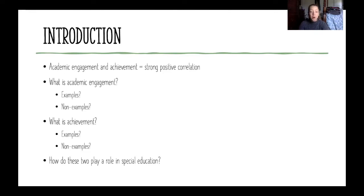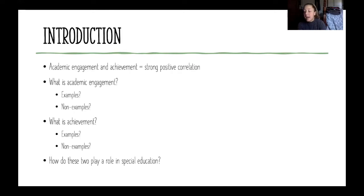What are some examples of academic engagement? Examples should be observable and measurable, just like we've been learning all semester. One example the article gave us was active student responding — when students respond to questions because they know the answer or understand the material. We're going to talk about OTR later, so stay tuned.